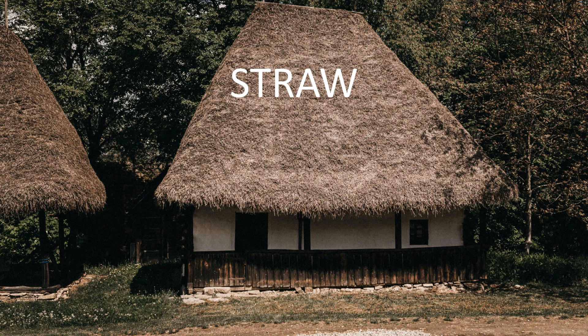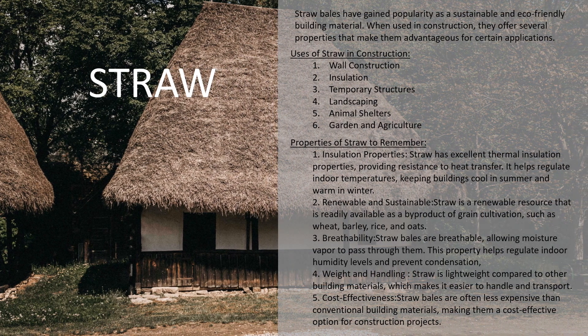Now let's discuss about the material straw. Straw is an agricultural by-product consisting of dried stalks of cereal plants such as wheat, rice, barley and oats. Straw bales have gained popularity as a sustainable and eco-friendly building material. Uses of straw include wall construction, insulation, temporary structures, landscaping, roofing, animal shelters, and garden and agriculture applications. Properties of straw include excellent thermal insulation, being a renewable resource readily available as a by-product of grain cultivation, breathability allowing moisture vapor to pass through, and being lightweight compared to other building materials, making it easier to handle and transport. Straw is also less expensive than many conventional building materials, making it a cost-effective option for construction projects.